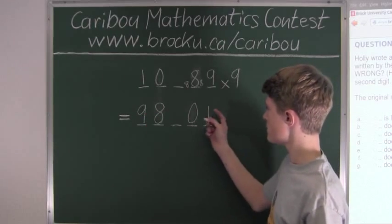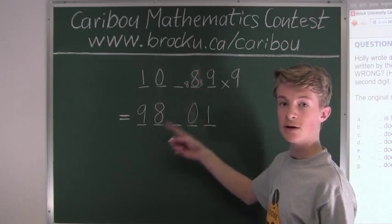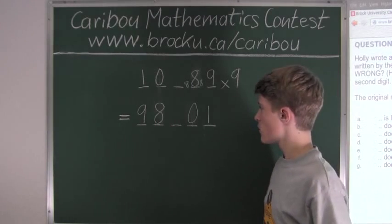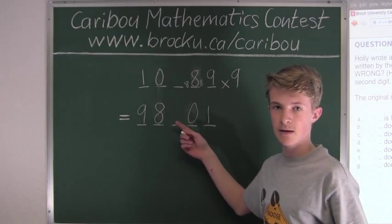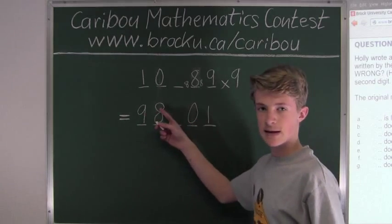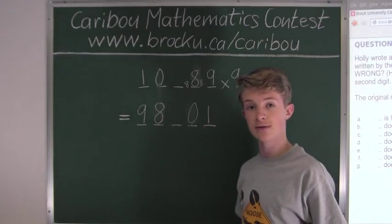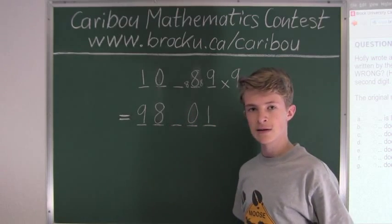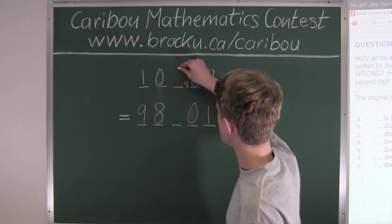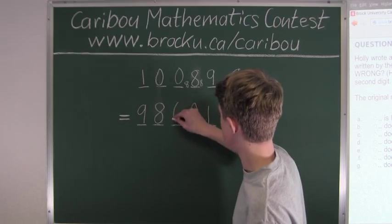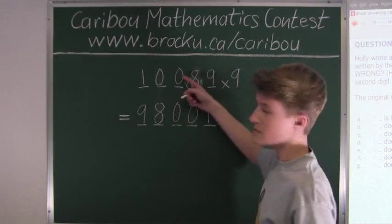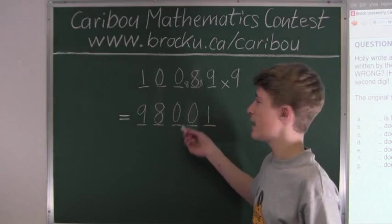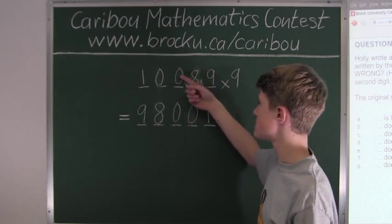The bottom number is 9 times the original, so it must be divisible by 9. The rule of divisibility by 9 says the sum of all digits must be a multiple of 9. We have 9 plus 8 plus 1 equals 18, which is already a multiple of 9. So the remaining digit must be either 0 or 9. Let's try 0: then 9 times 0 is 0, plus the carryover of 8 gives 8, but we need a 0 there — so it cannot be 0. It must be 9.